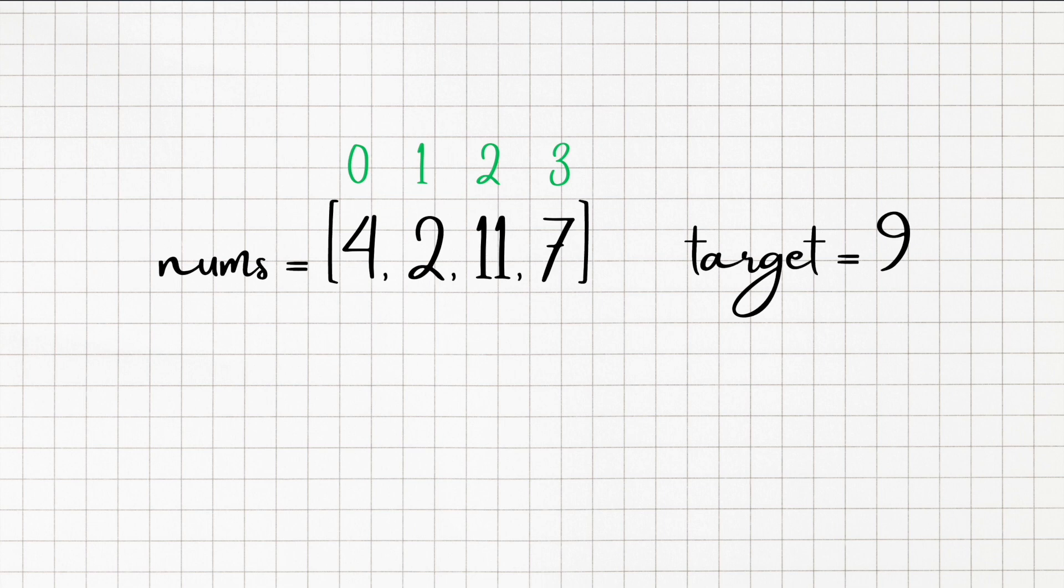Now let's see how we can improve our solution. The thing to notice here is that for each number, we are just looking for the difference between the target and this value. So for 4, we are looking for 9 minus 4, which is 5.